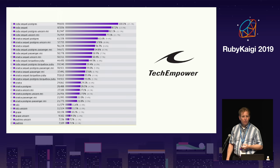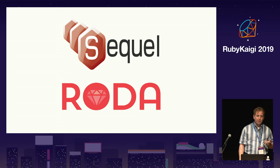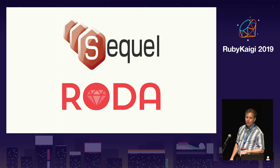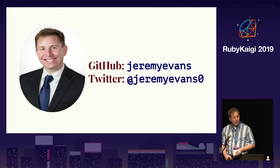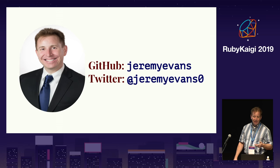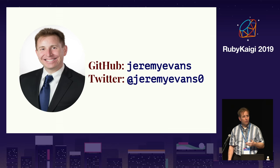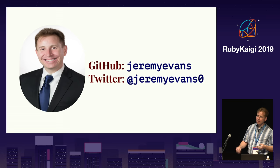Sequel is a toolkit for database access in Ruby and Roda is a toolkit for writing web applications in Ruby. While I'm not the original author of either library, I have been maintaining both for quite a long time and have added all of the optimizations I'll be discussing today. My name is Jeremy Evans. I started writing Ruby libraries in 2005 and contributing to Ruby development in 2009. My day job has me responsible for managing all information technology operations for a small government department, maintaining applications of all sizes written in Ruby using Sequel and Roda.